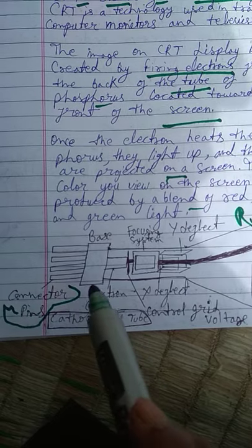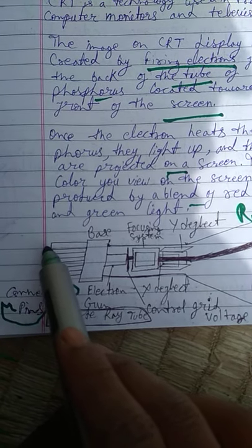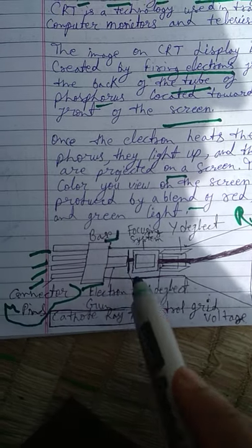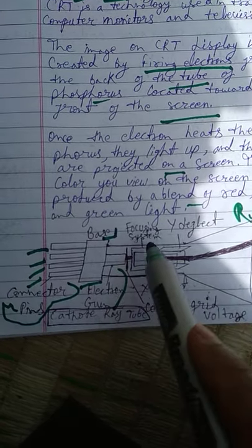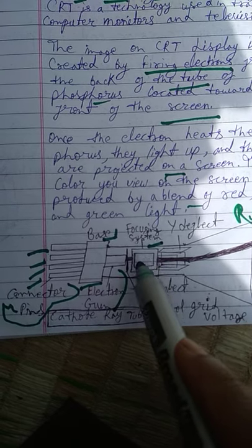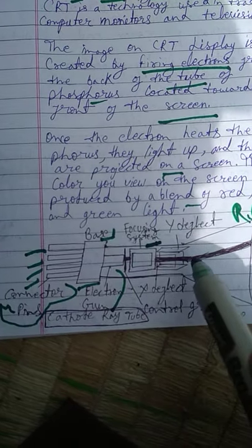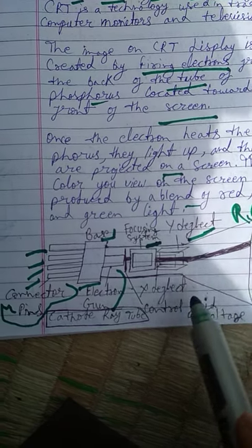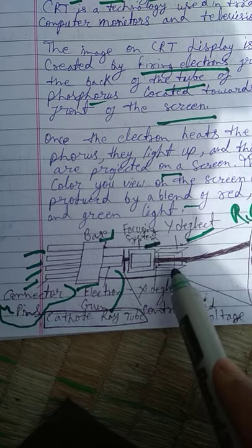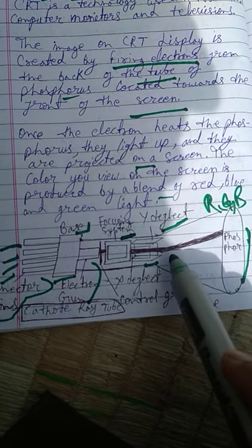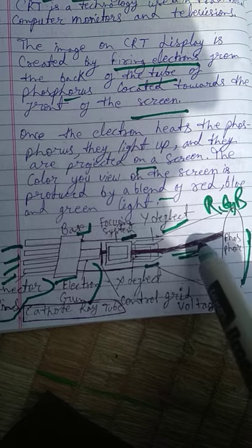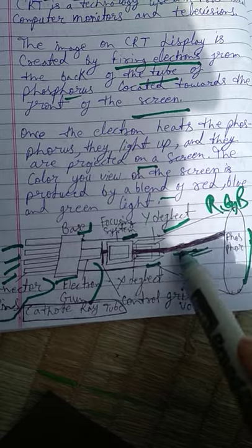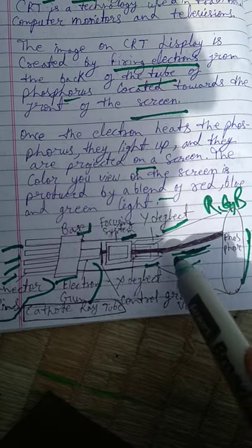The first component is the connector pins. Then we have the base and an electron gun. Next there is a square-form focusing system, followed by horizontal and vertical deflection plates — the Y deflection plate and the X deflection plate.